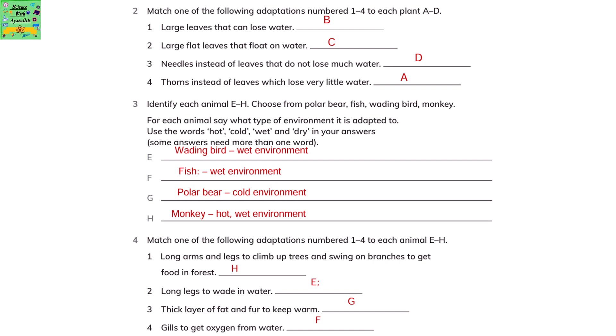Match one of the following adaptations numbered 1 to 4 to each animal E to H. Number 1: long arms and legs to climb up the tree and swing on branches to get food in forest — it's for number H, the monkey. Long legs to wade in water is for number E, the wading bird. Thick layer of fat and fur to keep them warm is for G, the polar bear. Gills to get oxygen from water is for F, the fish.